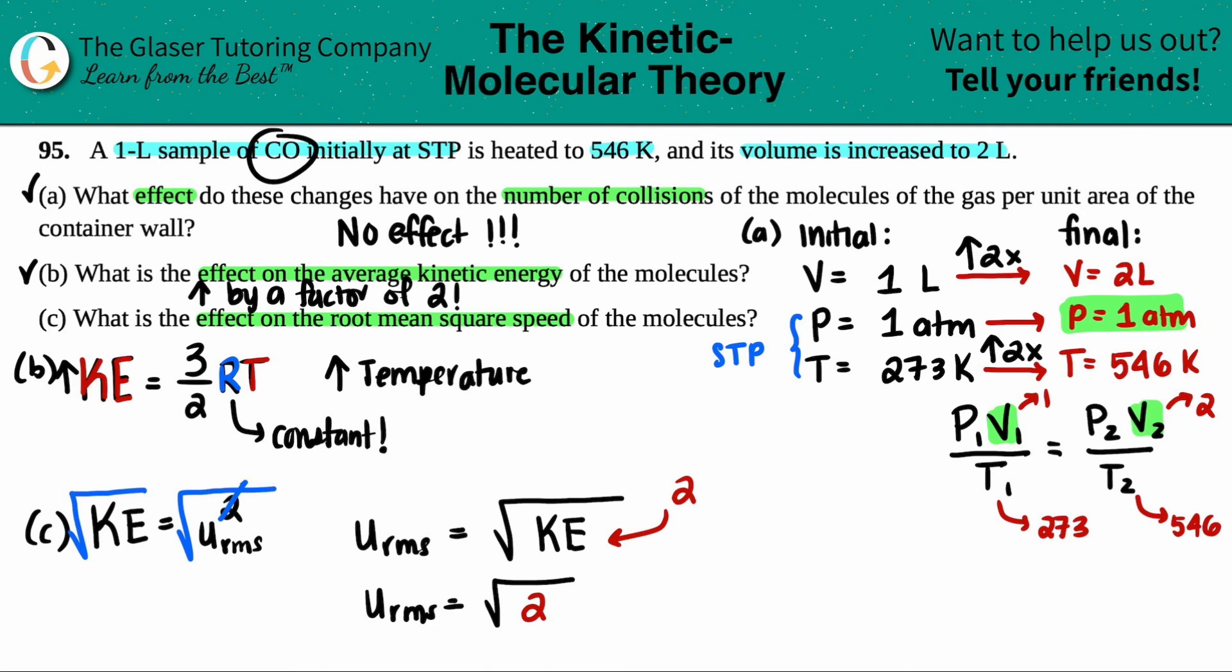And that would basically be the increase as well. Plug this in, the square root of two would actually be like 1.41. So it still would increase. And they all go together. If you increase the temperature, you increase the kinetic energy, and you will increase your root mean square speed. So those three should all be going in a direct relationship. So your root mean square speed would increase. And if you wanted to know the factor, it would be a factor of square root of two. And that is the answer to letter C.